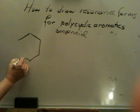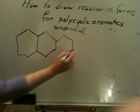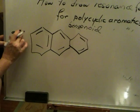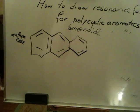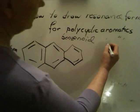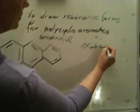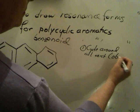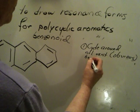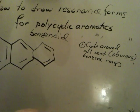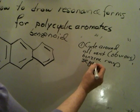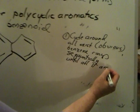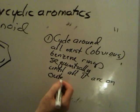So I have this method I use. For example, supposing I wanted to write all the resonance forms for anthracene. The first thing you want to do is cycle around all existing or obvious benzene rings, sequentially, until all pi bonds are on the outer ring.